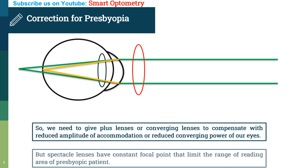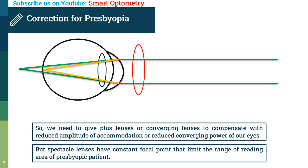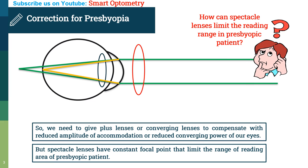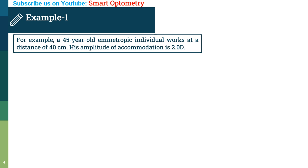But spectacle lenses have constant focal point that limit the range of reading area of presbyopic patient. You might be thinking, how can spectacle lenses limit the reading range in presbyopia? Let's understand this with an example.